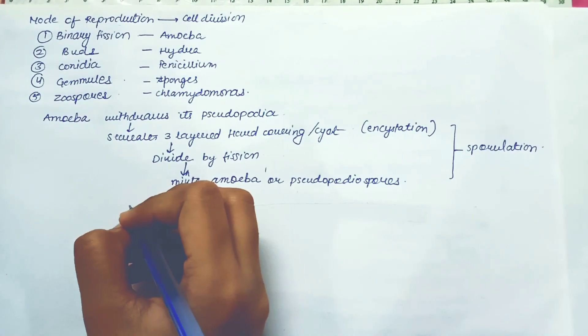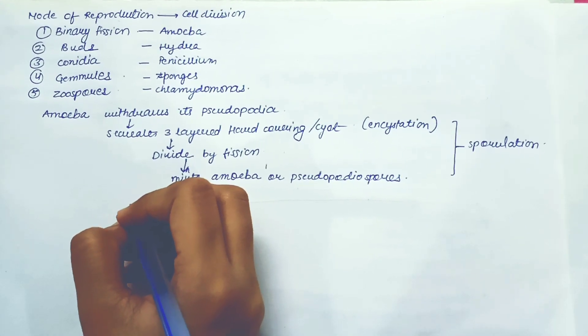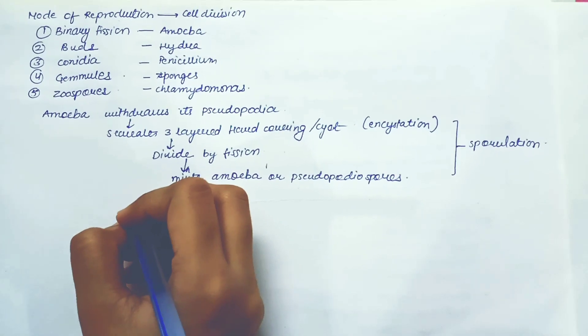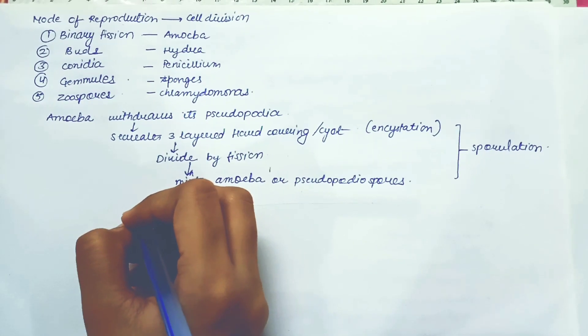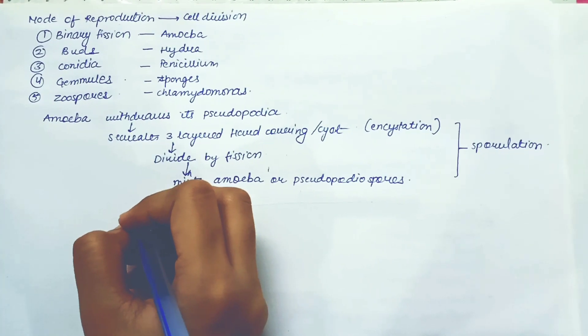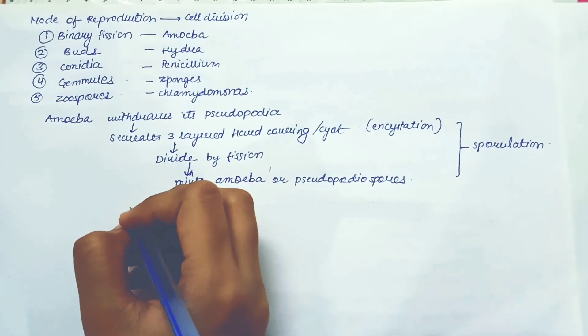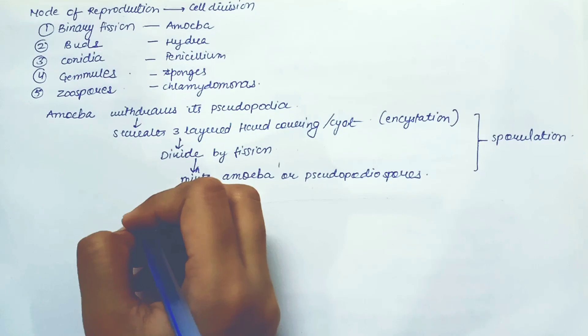And now we will be moving to kingdom fungi and simple plants which reproduce through special asexual reproducing structures. We all know this. So the term asexual reproduction and vegetative propagation are similar things.